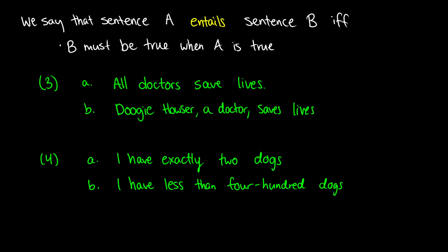Imagine you have two sentences A and B, and A is for sure a true sentence — for example, 'All doctors save lives.' If A entails B, this means B is also going to be true. So if 'All doctors save lives' is true, then 'Doogie Hauser, who is a doctor, saves lives' must be true as well. This is sort of like the 'all men are mortal, Socrates is a man, therefore Socrates is mortal' argument in philosophy.